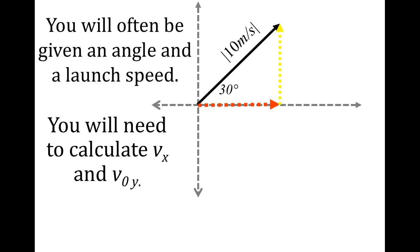For a projectile launched at an angle, we're often given the initial launch speed — shown here as 10 meters per second — and the angle from the horizontal. We need to calculate the velocity in the x direction and the velocity in the y direction, because our equations can only look at motion in one direction at a time. We don't have an equation that incorporates both.